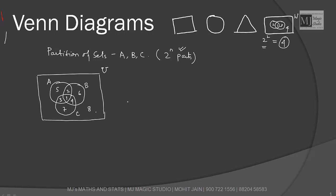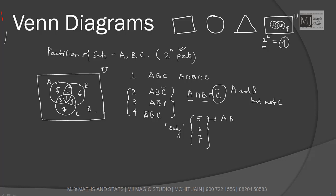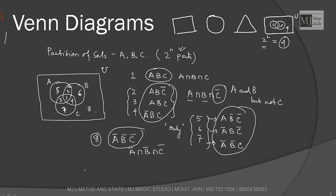If we have three sets and a universal set, maximum number of parts which we can see are eight. Now what are these parts actually indicating? First let's look at one. One is common to all. It is common to A, B, and C. That's why we write this as A∩B∩C. These eight parts can all be represented with help of set theory notation formulas.